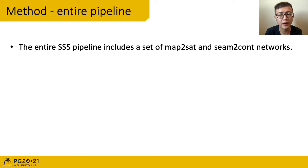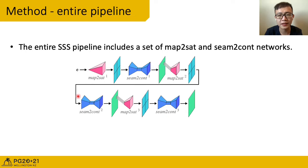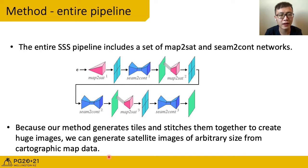The entire SSS pipeline includes a set of map2sat and seam2cont networks. This figure shows a three-level SSS. It starts from a random noise, which allows us to generate images of different styles. The first map2sat network will generate satellite images at scale level 1. Then these small images will be tiled up into a large image with seams. The first seam2cont network will remove seams and output the final result of scale level 1. We then use the level 1's result as color guidance to generate level 2's results. Keep doing so, we can get a set of satellite images of three scale levels. And because our method generates tiles and stitches them together to create huge images, we can generate satellite images of arbitrary size from cartographic map data.